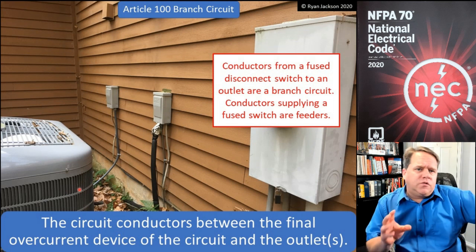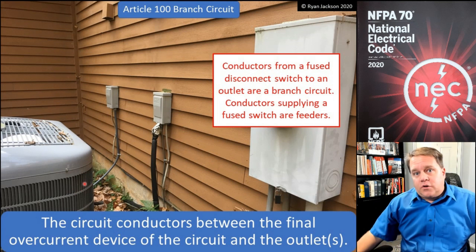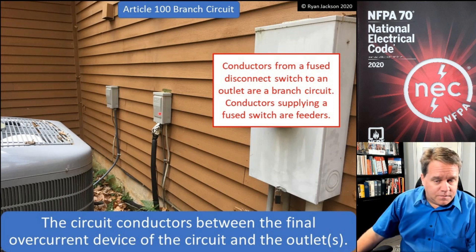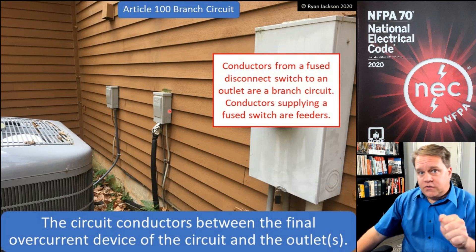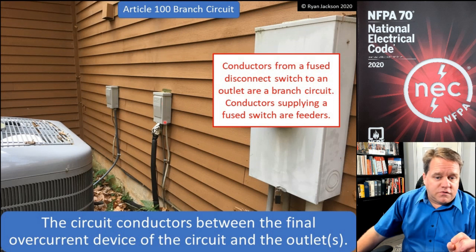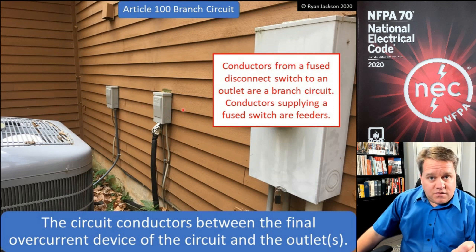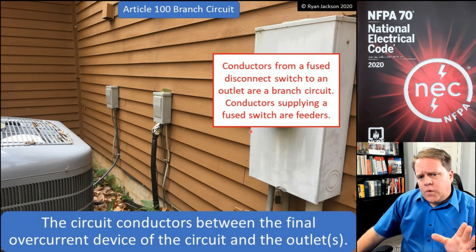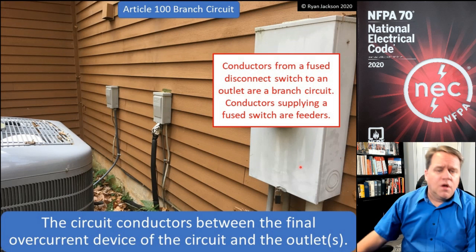What if this was just a pullout disconnect with no overcurrent protection? If that's the case, then the circuit breaker or fuse that supplies the disconnect would be the beginning of the branch circuit. So if the panel has a breaker and it feeds a pullout disconnect with no fuses, then the branch circuit starts back at the breaker, continues through the switch, and to the outlet point. If we had overcurrent protection at the disconnecting means, then the branch circuit starts at the disconnect and ends at the outlet. The wires between the circuit breaker and the fused disconnect would be called a feeder circuit — we'll cover those in a different video.